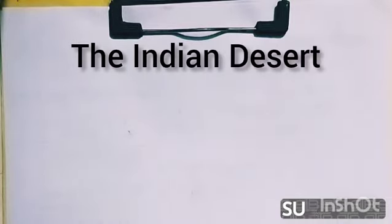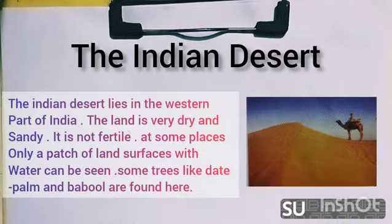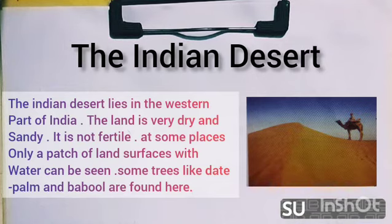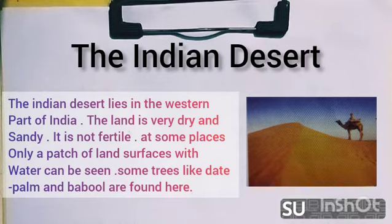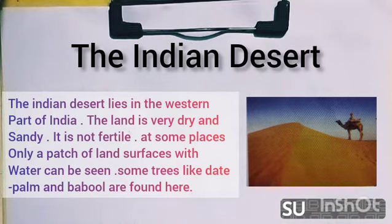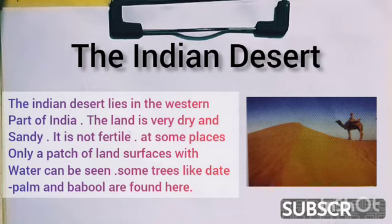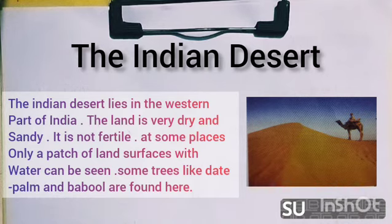The third physical feature of India is the Indian Desert. The Indian Desert lies in the western part of India. The land is very dry and sandy and it is not fertile. At some places, only a patch of surface with water can be seen. Some trees like date palm and babul are found here.